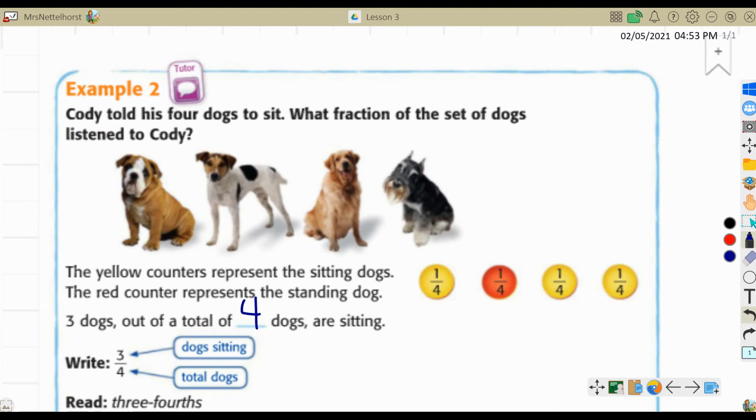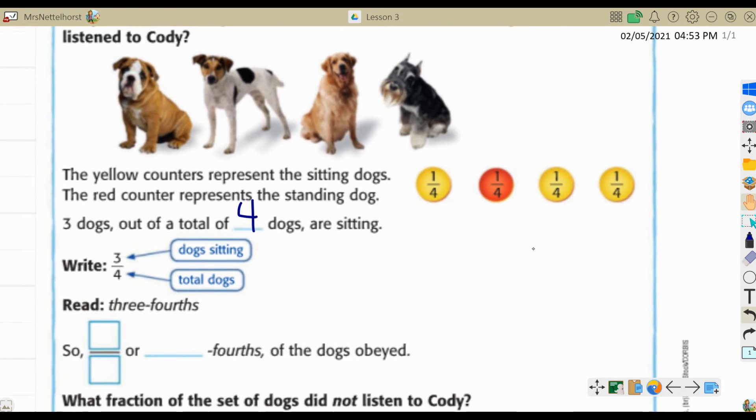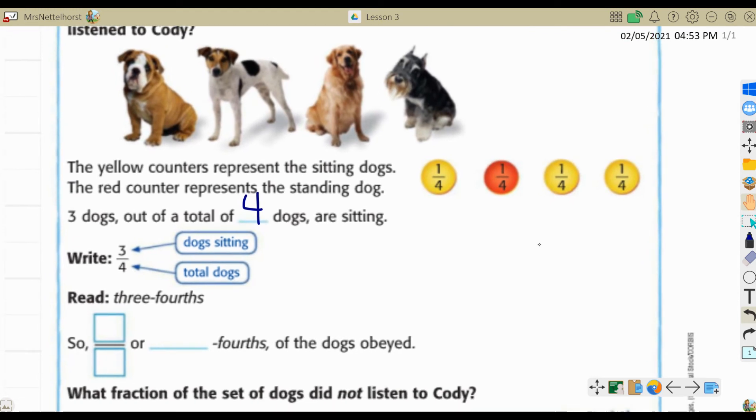So we write three-fourths, three dogs sitting, four dogs total. So we read it as three-fourths. So three-fourths of the dogs obeyed.